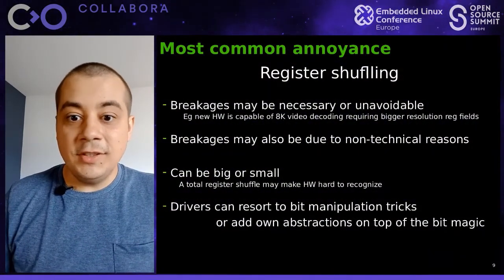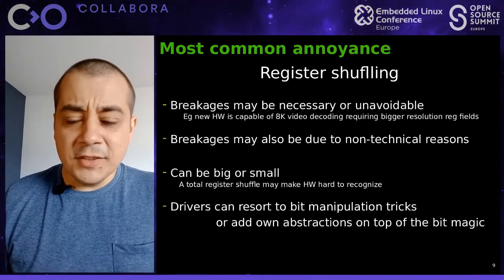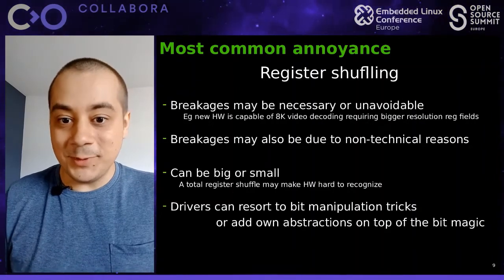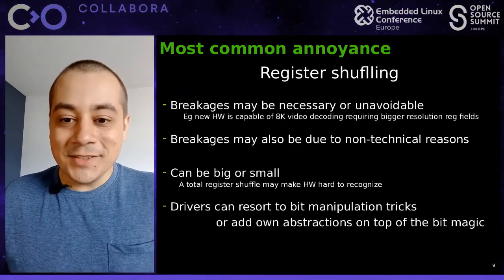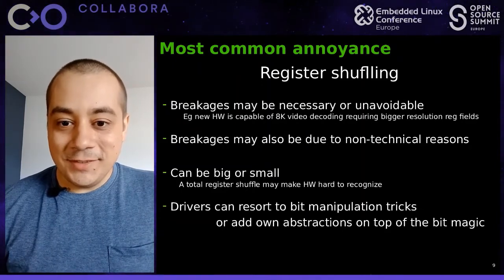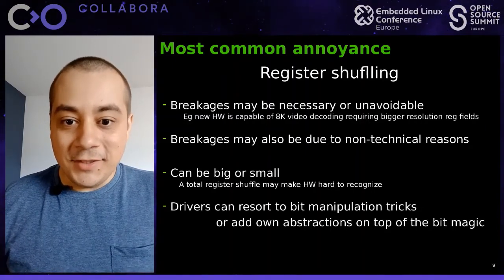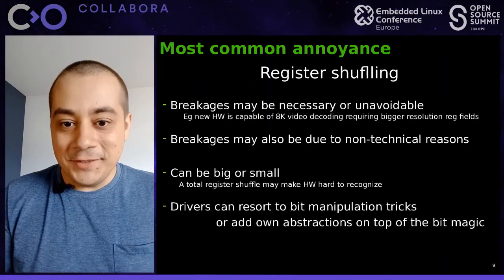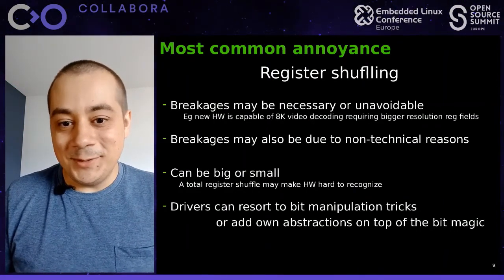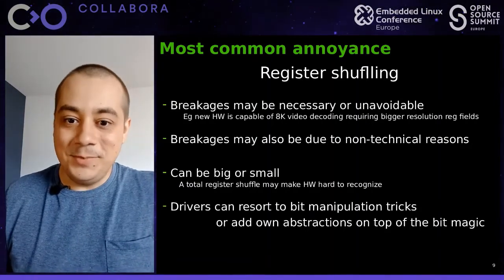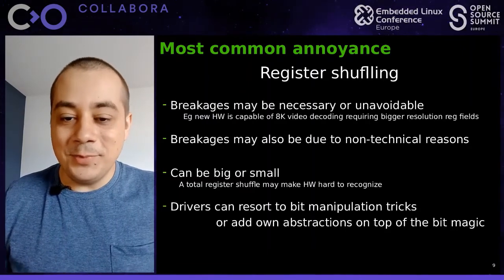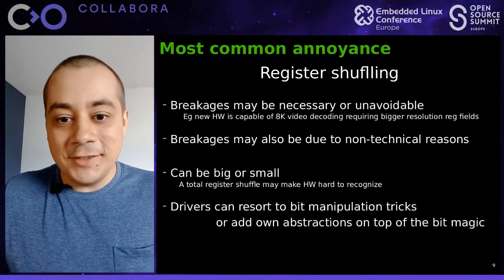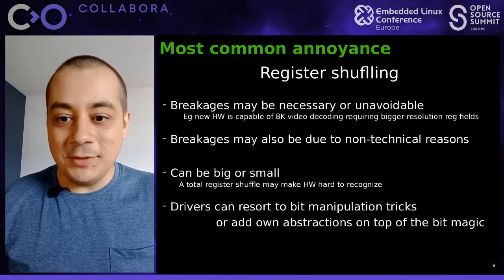This is the problem driver developers encounter quite a lot: register shuffling. The hardware interfaces change, and this can be due to factors outside the control of software developers. Sometimes the hardware interface changes because hardware evolves with new use cases — like 8K video decoding requiring bigger register fields to fit higher resolutions. New features like adding stride support for decoded images also drive changes. Breakages can also be due to non-technical business reasons, like optimizing cost by merging two cores.